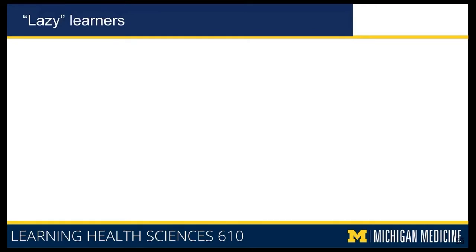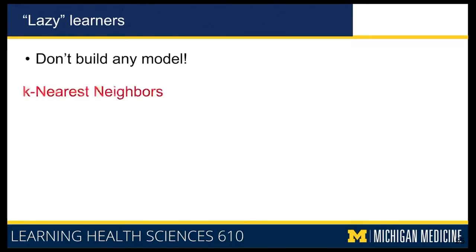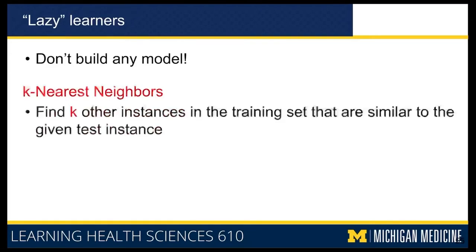One school of thought in supervised learning is that you really do not need to learn anything when you get the training data. So you do not build a model — just remember the instances that you see. Then when you are actually trying to infer the label, meaning when you are labeling a new instance, find other instances from your training data that are similar to this given test instance.